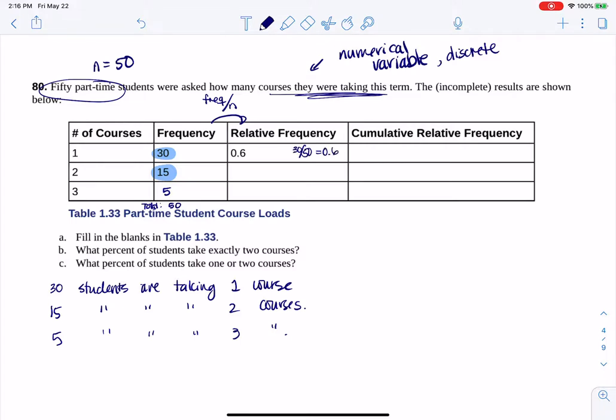And that's where we get 0.6. So I'm going to now take 15 and divide it by 50, and that's where I'm going to get 0.3. And then finally, I'm going to take 5 and divide it by 50, and that's where I'm going to get 0.1. So if I wanted to fill in the rest of this table, I would put 0.3 here and I would put 0.1 here.